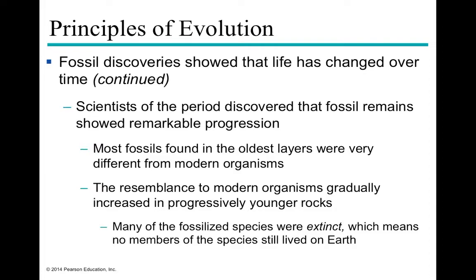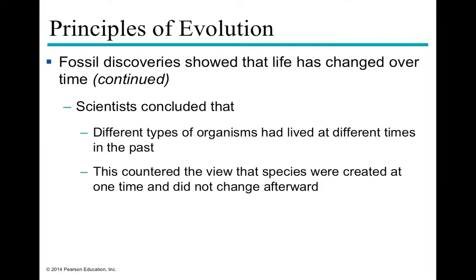Fossilized species are often extinct, meaning no living members exist today. Mass extinction events — from competition or catastrophes — eliminated many species at once, while some lineages simply ended because organisms weren't fit to survive to the next generation. We can use the fossil record to determine the types of organisms that lived at different points in the past. All of this led to the idea that species were not created at one fixed time and left unchanged — contradicting the then-current theological view.